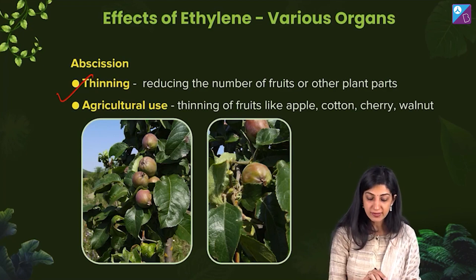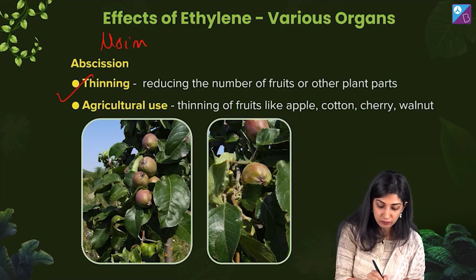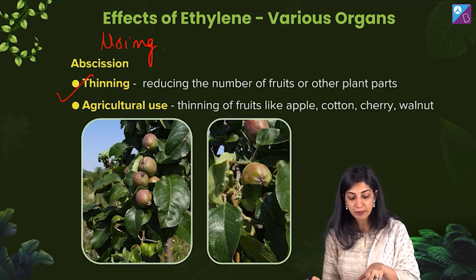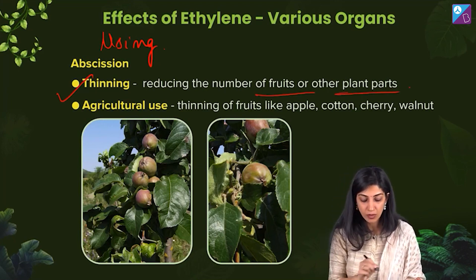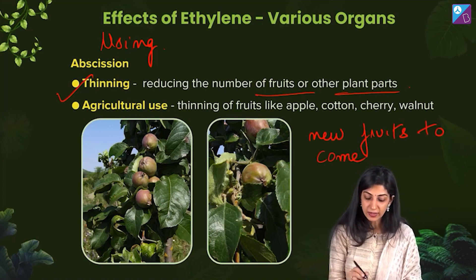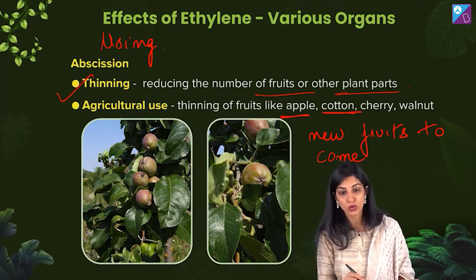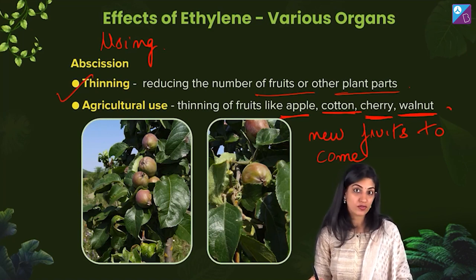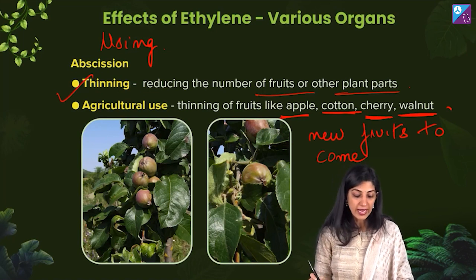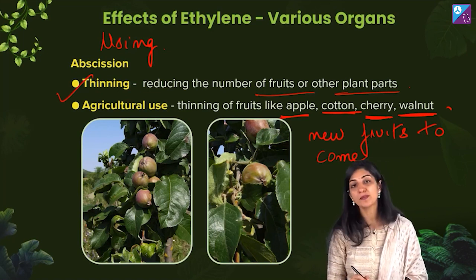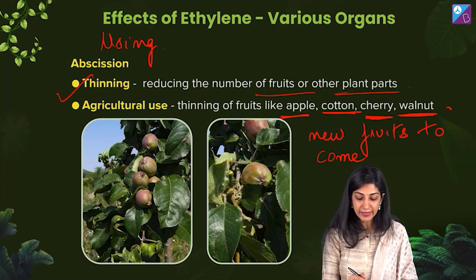Have a look at this beautiful example. We are using the property of abscission caused by ethylene to bring about thinning — reducing the number of fruits or other plant parts — so that new fruits come. It is done in apple, cotton, cherry, and walnuts. Cotton is so useful for us commercially. In the figure, you can see very clearly that here smaller apples are there, but after thinning, the apples get more space and don't have to compete for resources, so we see a slightly bigger apple.